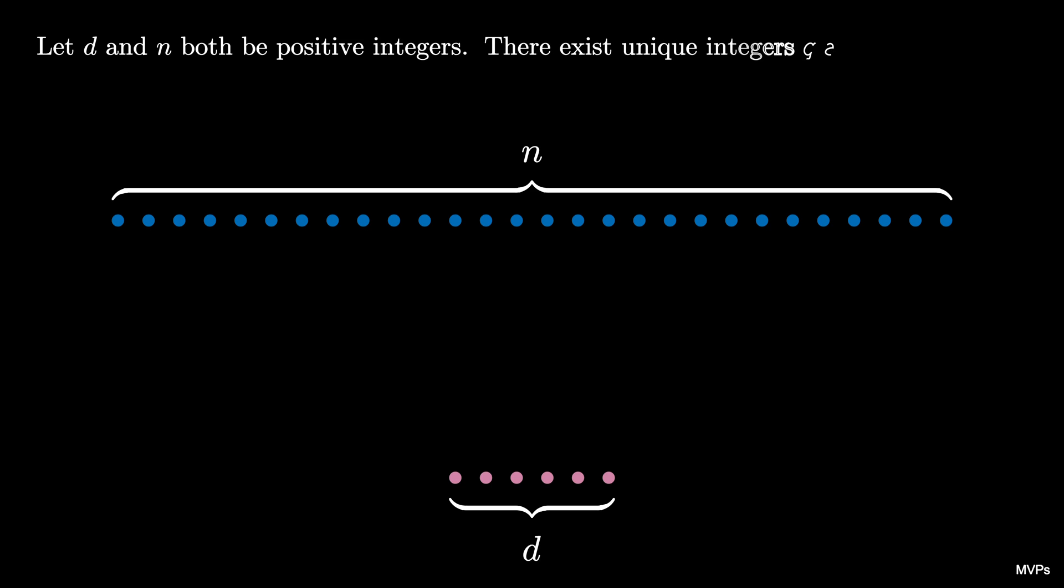The theorem we're interested in says there exist unique integers q and r with 0 less than or equal to r less than d satisfying the equality n equals q times d plus r.